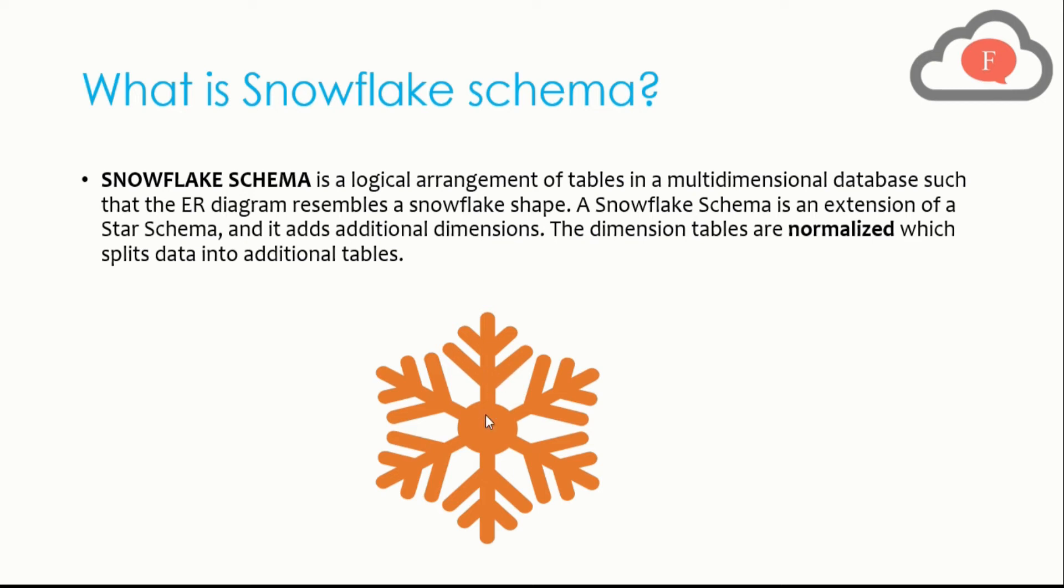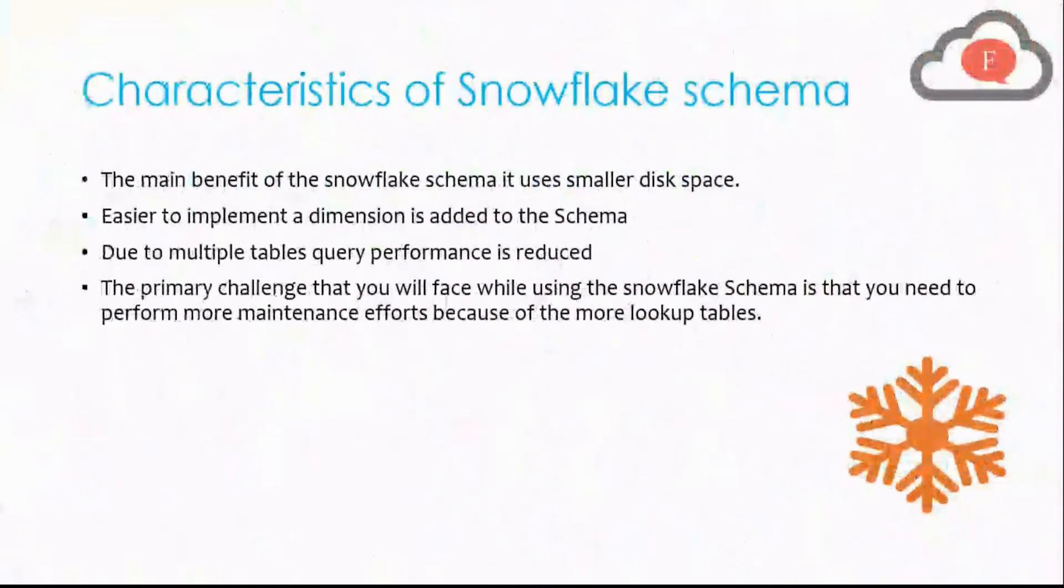That means one node is connected with two dimension tables, and that middle node will be connected to the fact population. This is like a superstructure with a substructure within a substructure, connecting multiple dimension tables to one fact population table, and it repeats in a way that looks like a snowflake. Now let's talk about the characteristics of the snowflake schema.